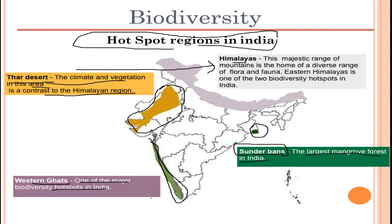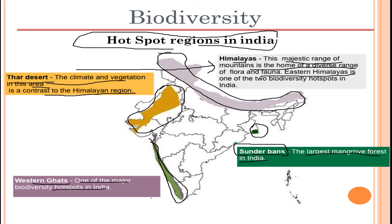The Sundarbans also holds the record for the highest tiger population in India. Next, we have the Himalayas, which are the most popular hotspot, lining the upper part of India. It is a majestic range of mountains and home to a diverse range of flora and fauna. The Eastern Himalayas is one of the two biodiversity hotspots in India.